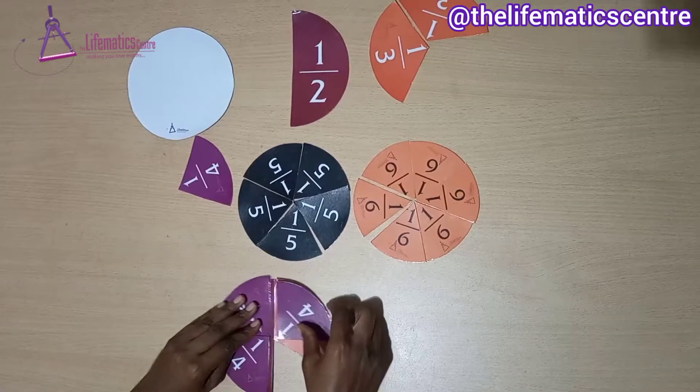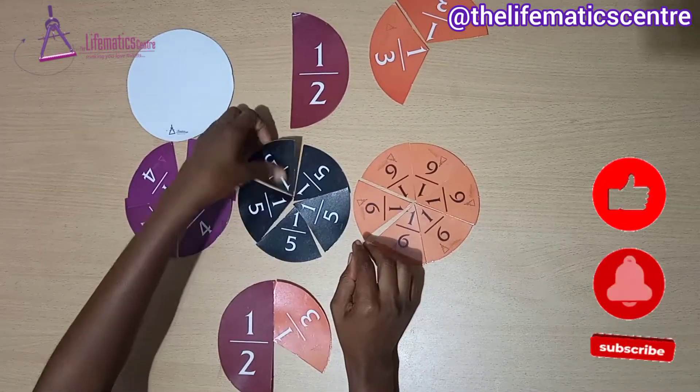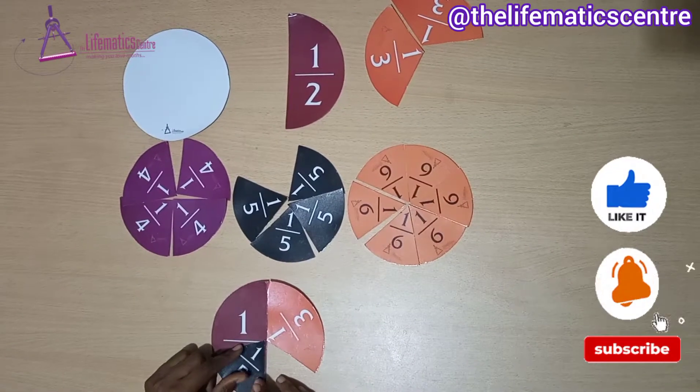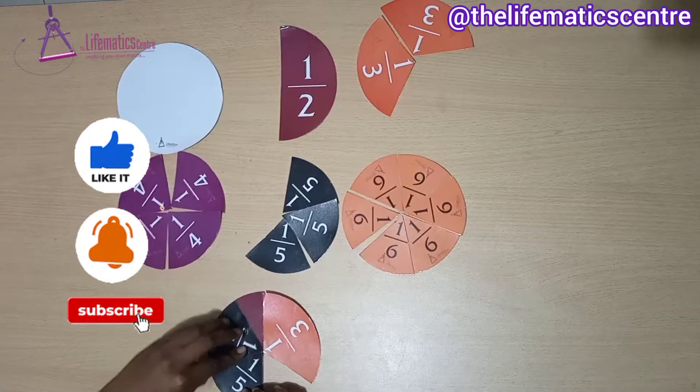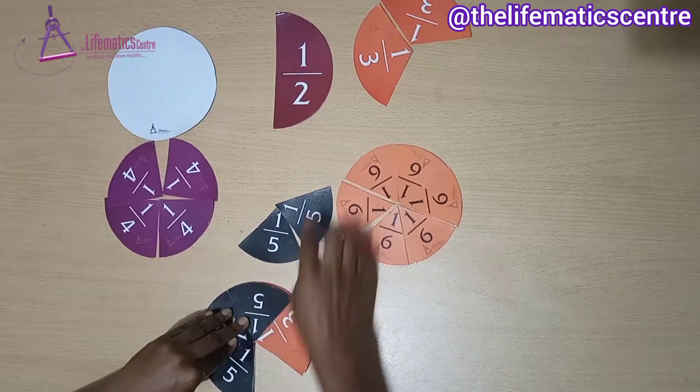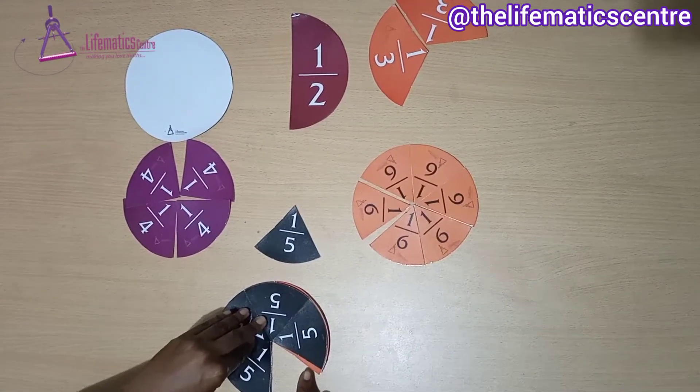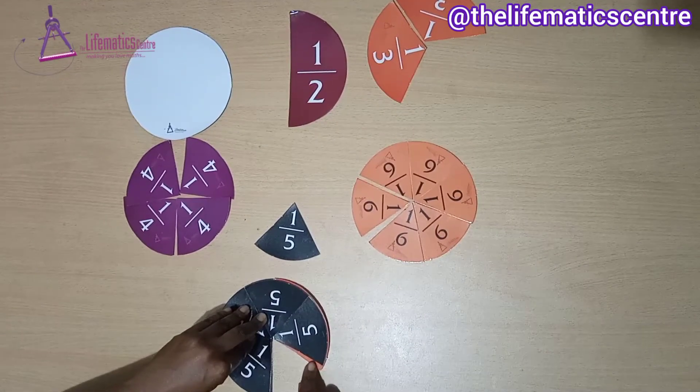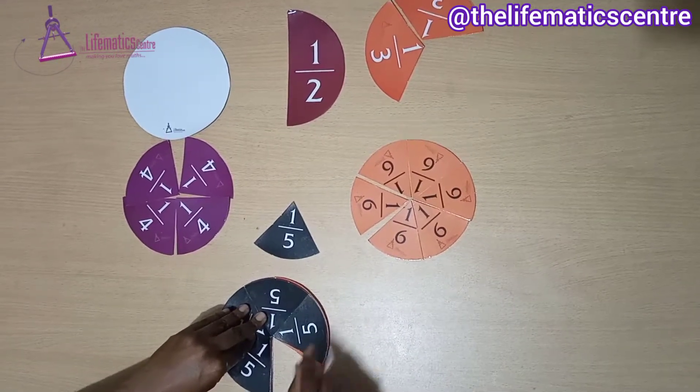Let's try 1/5. One 1/5 here, another one here, another one here, another one. Oh, it's almost the same, but there's a little space which is too small for this to fit in, so it's not 1/5.